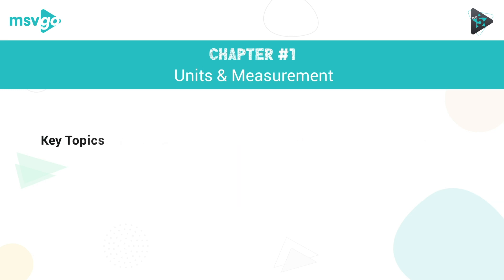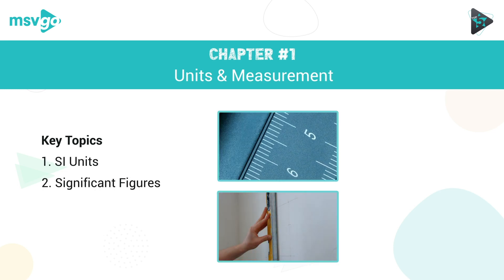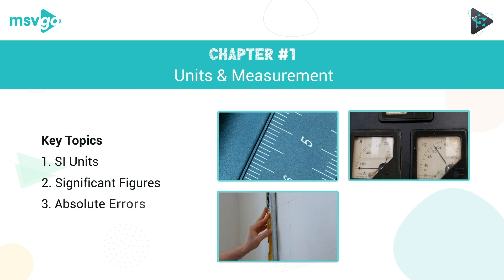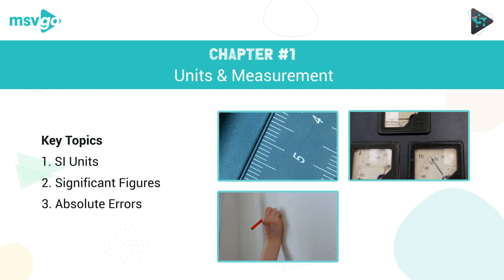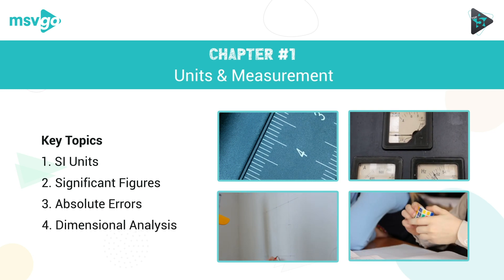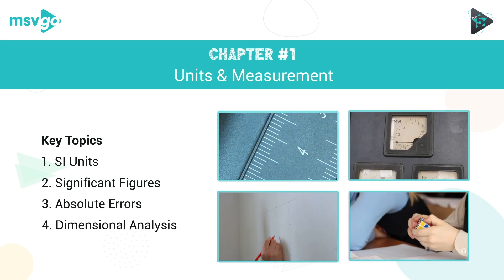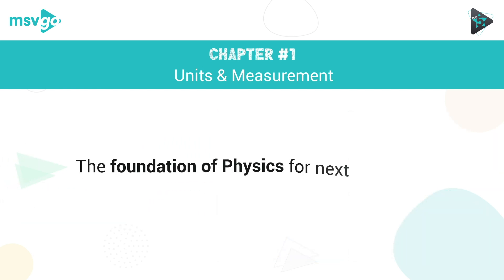The key subtopics in this chapter are: SI Units, Significant Figures, Absolute Errors, and Dimensional Analysis. Units and quantities are the absolute foundation to physics.